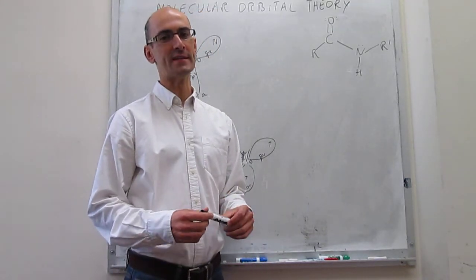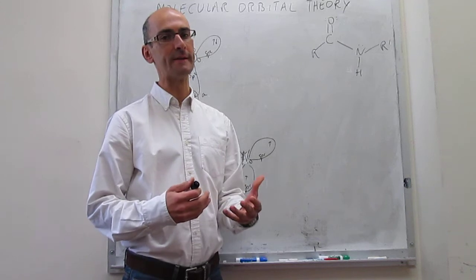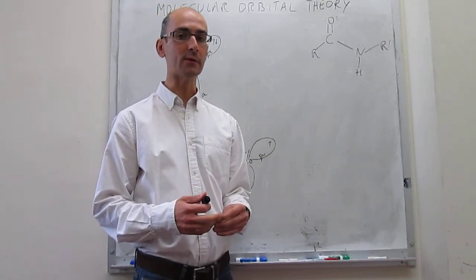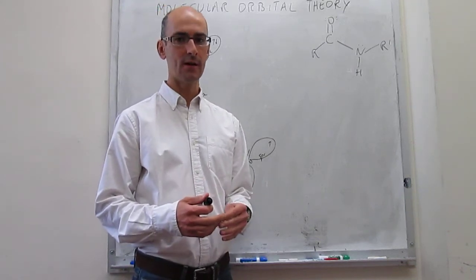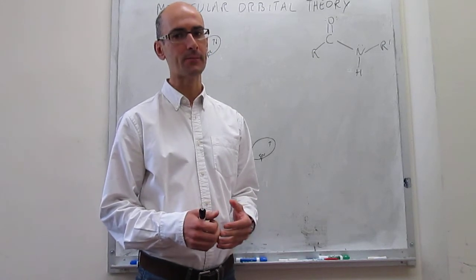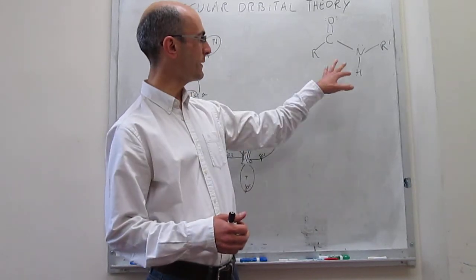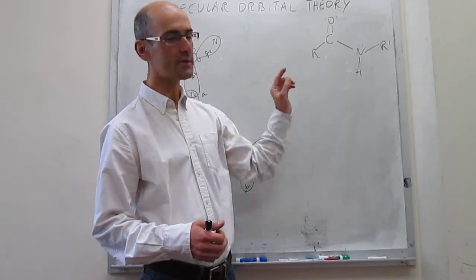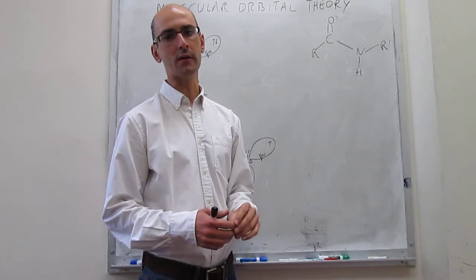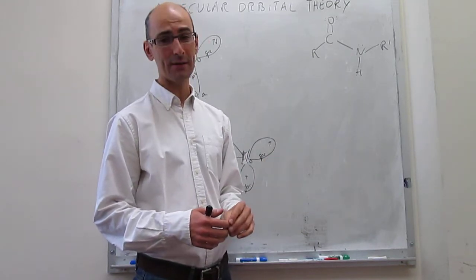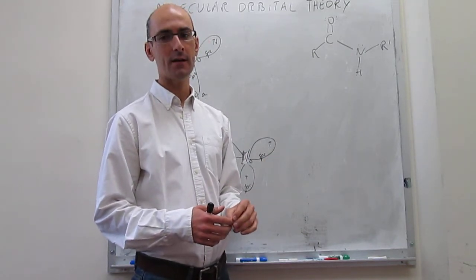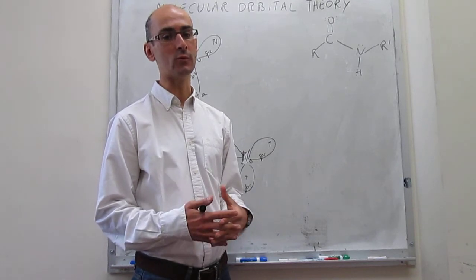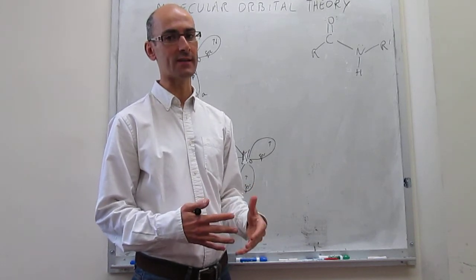In this video, we start to explain the molecular orbital theory diagrams for polyatomic molecules by taking a look at the peptide bond. The peptide bond we're trying to explain has a key characteristic — it's planar — which molecular orbital theory is able to explain very successfully.